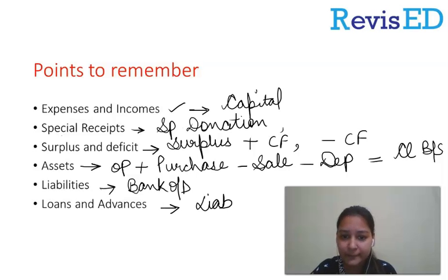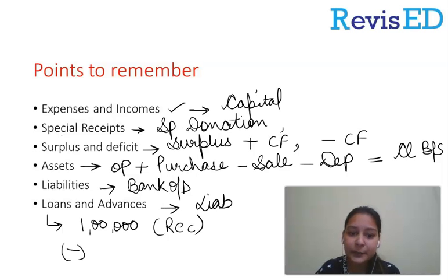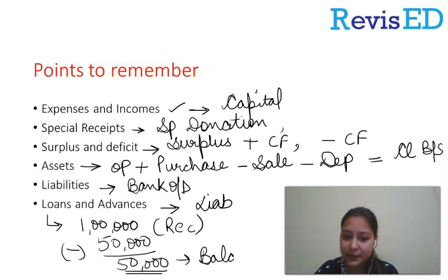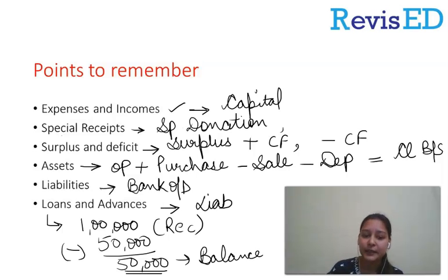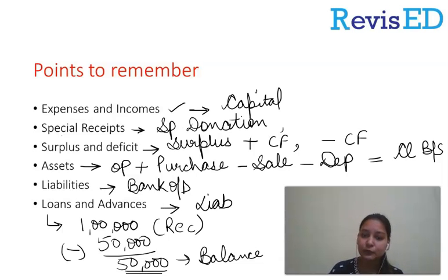For example, if we have a loan of $1,000,000, we will show the receipt side of the loan. If we repaid $50,000 of the loan, that means in the balance sheet we will show the remaining balance — $50,000 less than the original. We do not show the full loan amount; the amount not yet repaid is what we show in the balance sheet. Similarly for advances, we show only the outstanding balance, not the whole amount.